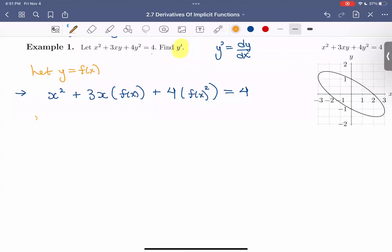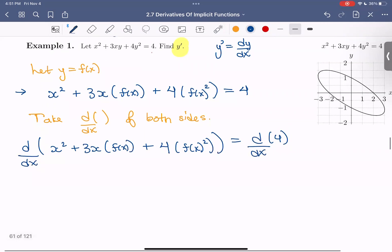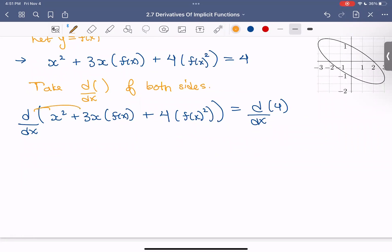So I'm going to rewrite this x squared plus 3x times f of x plus 4 times f of x squared equals 4. So the more you do of these types of problems, the more you will start to be comfortable not substituting in f of x for y. But when we're first getting into them, this substitution is really helpful for reminding us that y is, in fact, a function of x. Okay, so then the next step is to take the derivative of both sides.